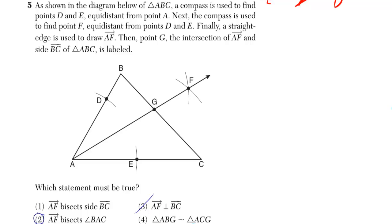But we can prove it based upon what they did. They said that a compass is used to find points D and E that are equidistant from point A. Well, here's point A, and they told us both points D and E are equidistant. So that means that length is the same thing as that length.